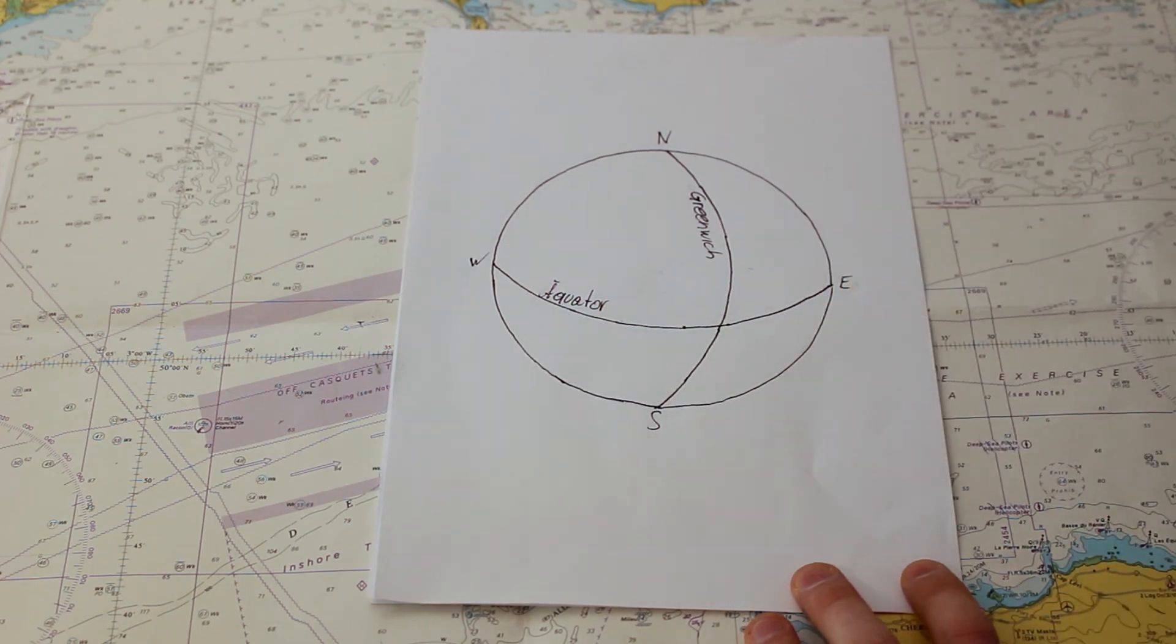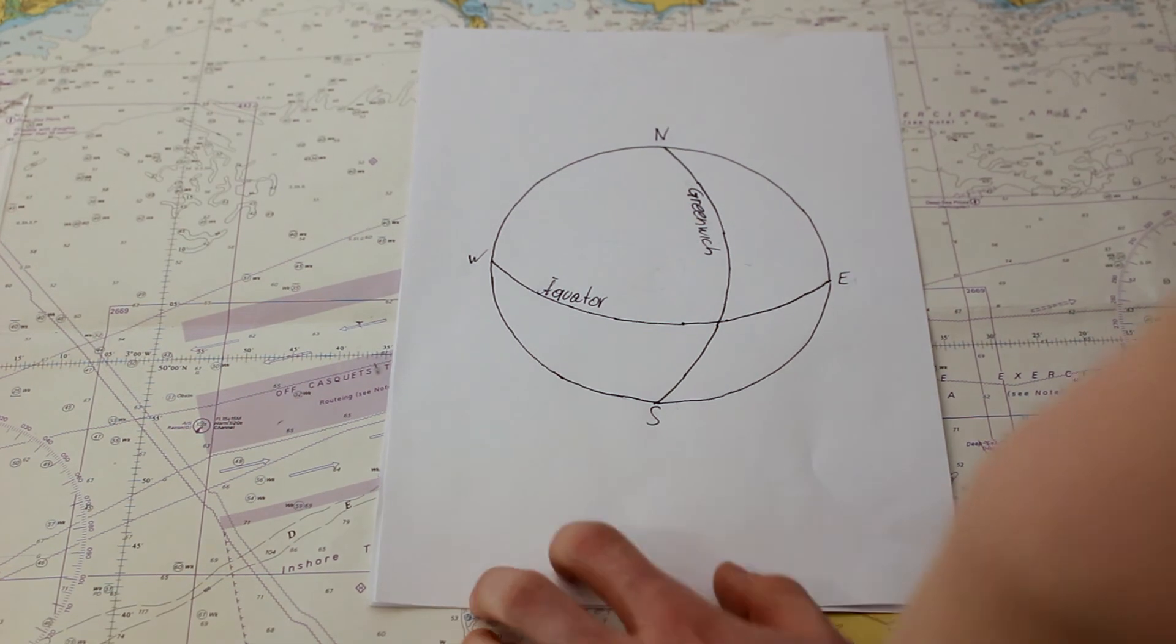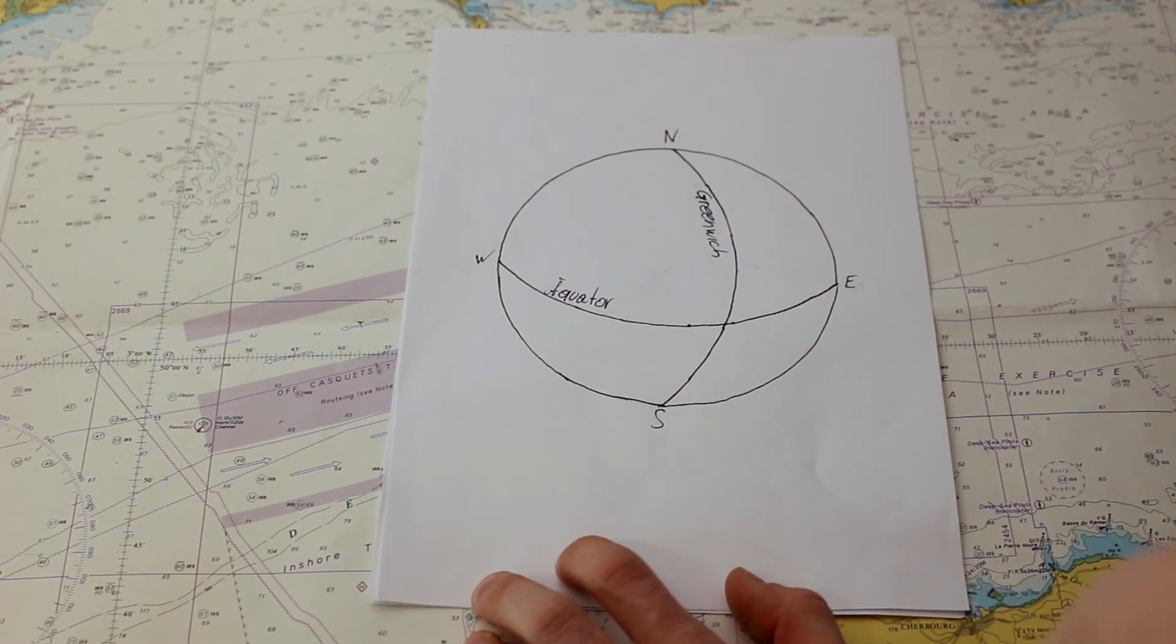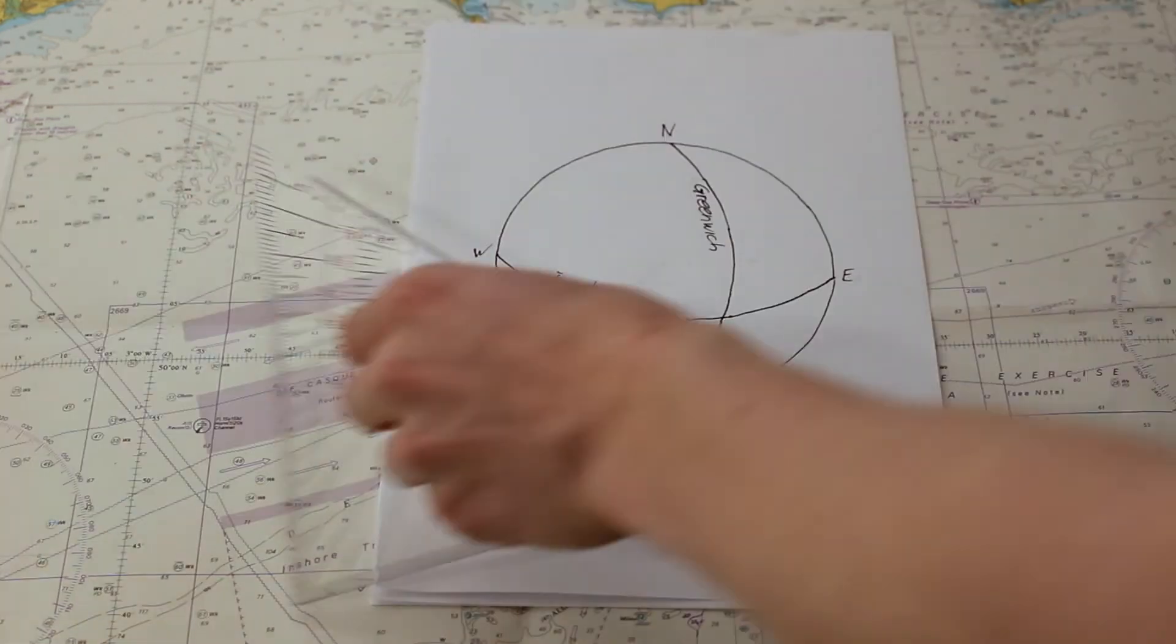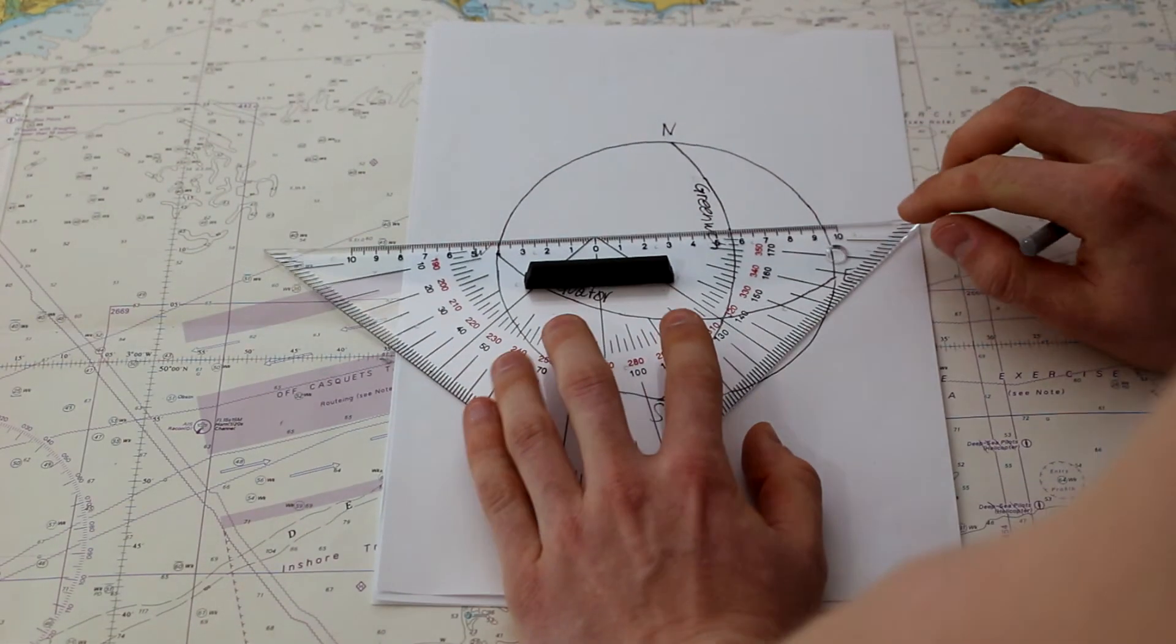With these coordinates you can describe every point on the earth. So, how is this done? You always start with the latitude. For example, we have our position here somewhere in the northwestern part of the earth.